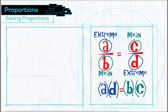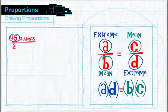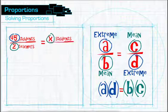Recall that the proportion we set up for Rockport High was 45 students divided by two teachers equals X number of students divided by 60 teachers.